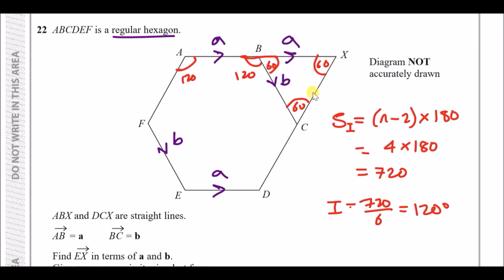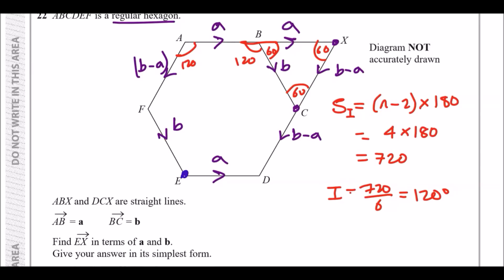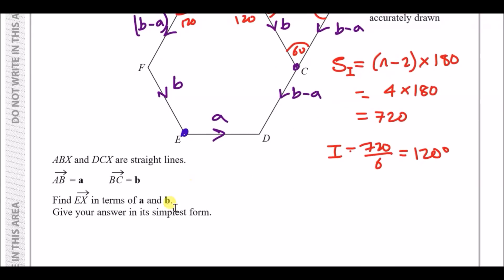Now we make an expression for the other diagonal vector. We know the route along one side of the diagonal but not the opposite end. To go from X to C, we can travel through minus a and then plus b, so that's b minus a. With vectors you can take any route as long as you reach that position, so this vector is b minus a.